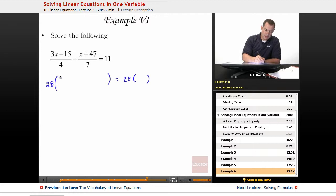There's a lot to keep track of in here, so 3x minus 15 all over 4 plus x plus 47 all over 7 and 28 times 11. All right, so we'll take that 28 and we'll actually distribute it to both parts on this left side.